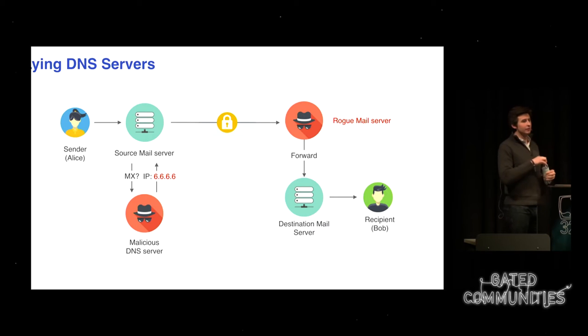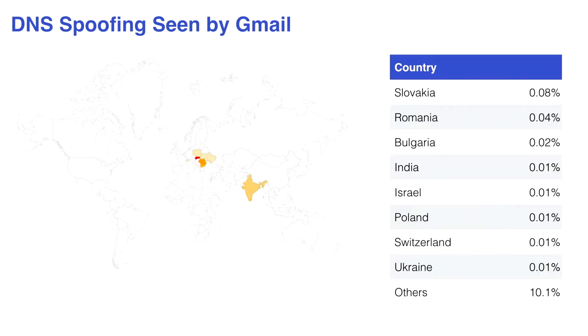Vielleicht merkt der eigentliche Mail-Server, dass das E-Mail verloren gegangen ist, aber mittlerweile habe ich Zugriff auf den ganzen Inhalt. Wir haben die DNS-Server im gesamten Internet betrachtet, alle Open Resolvers angeschaut: Was ist der MX-Record und die IP-Adresse für gmail.com? Wir haben festgestellt, dass in über 60 Ländern das alles irgendwie nicht gestimmt hat und ein gewisser Anteil von gefälschten Absendern kam. Wir sehen, dass es tatsächlich real ist, wir wissen nur nicht wie viel.